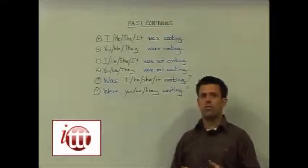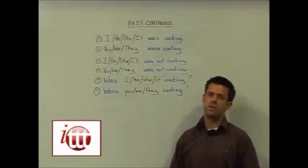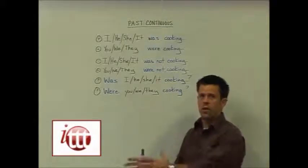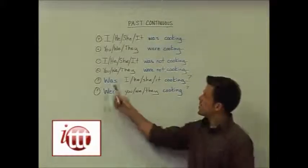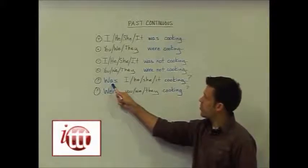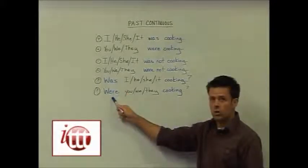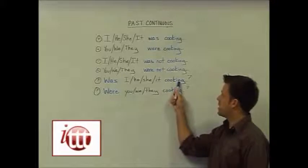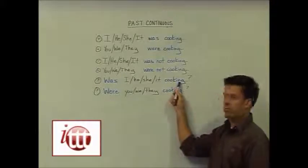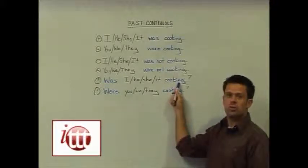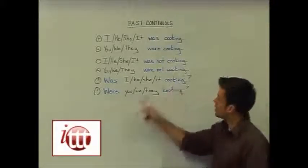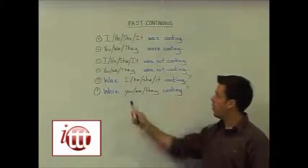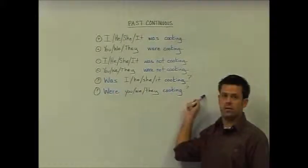In order to form the question for the past continuous tense, again we invert our subject and our helping verb. We start our question with 'was' or 'were' depending on the subject, and keep the present participle form of the main verb — so: 'Was he cooking last night?' or 'Were you cooking last night?'